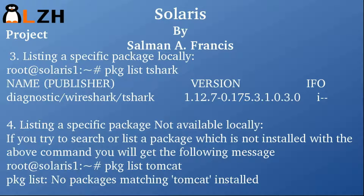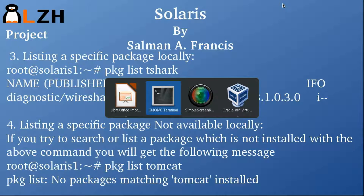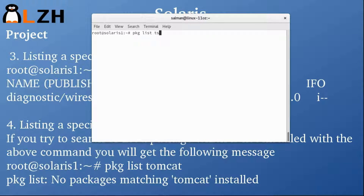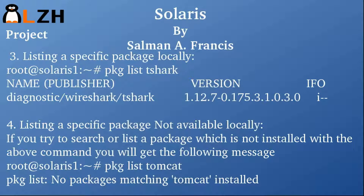Let's go back to our slides. In order to list a specific package that is locally available on your system, we use 'pkg list' and the package name. In our example it's going to be tshark: 'pkg list tshark'. You can see it gives us full information — the version is 1.12, the package is part of Wireshark, and it's present in the diagnostics group.